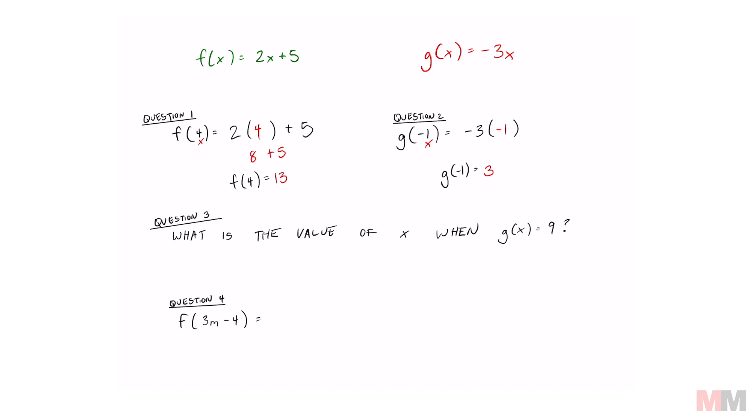Literally replace this g of x with what this says, nine. And then you just got to write what the expression is equals negative three x. Here's another clue. When it says what is the value of x, you need some kind of equation to solve for x. So here's my equation right here. All I got to do is divide both sides by negative three. And now we got negative three equals x.